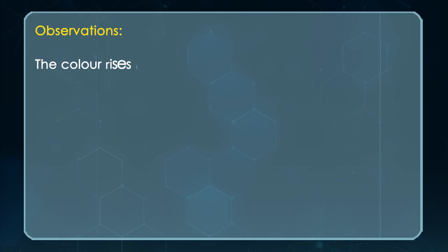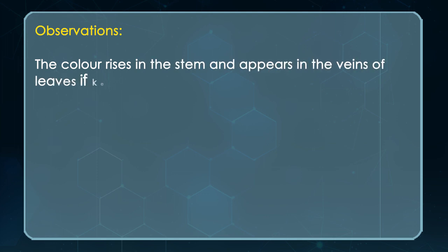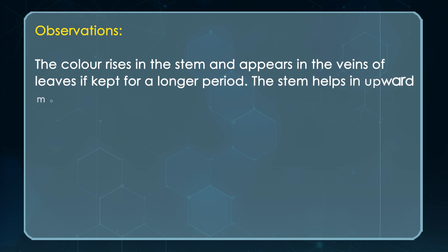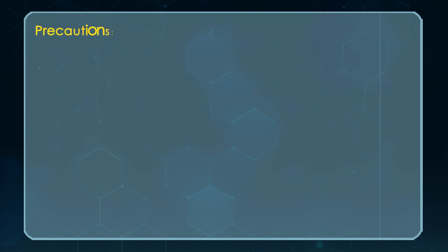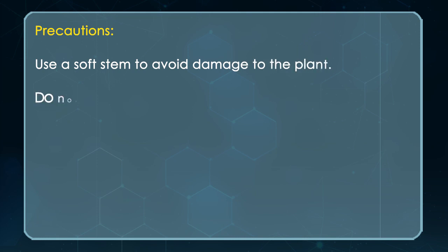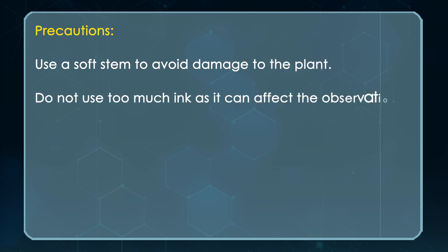Observation: The color rises in the stem and appears in the veins of leaves if kept for a long period. The stem helps in the upward movement of water, which carries water and minerals to leaves and other plant parts. Precautions: Use a soft stem to avoid damage to the plant. Do not use too much ink as it can affect the observation. Handle the glass carefully to avoid breakage.